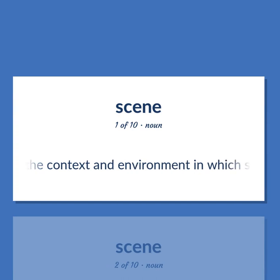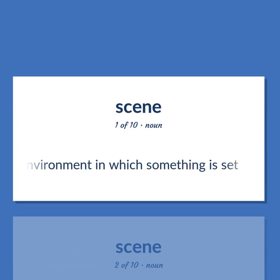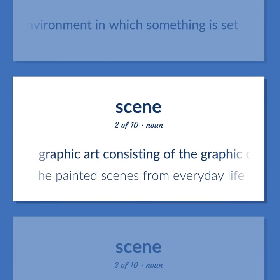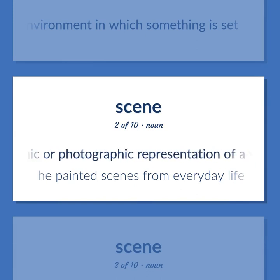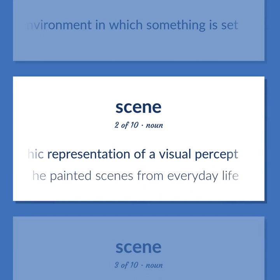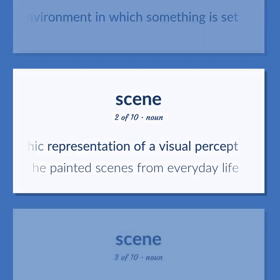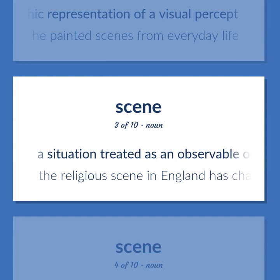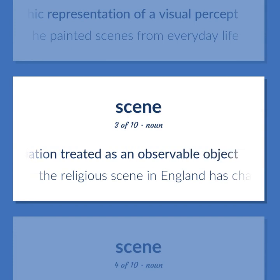Scene: The context and environment in which something is set. Graphic art consisting of the graphic or photographic representation of a visual percept. He painted scenes from everyday life. A situation treated as an observable object. The religious scene in England has changed in the last century.